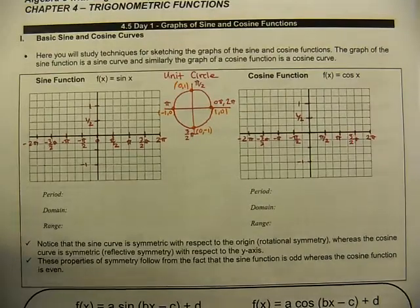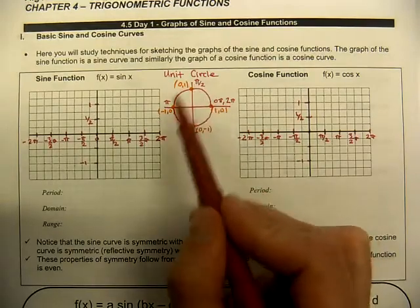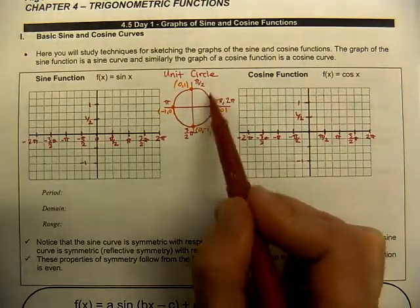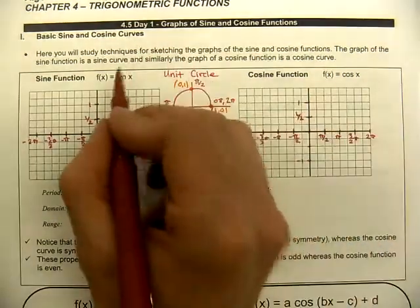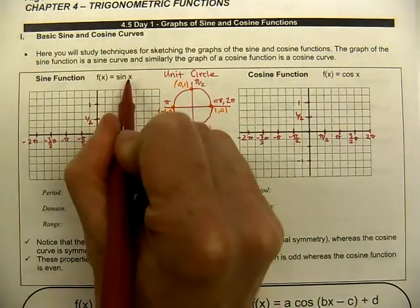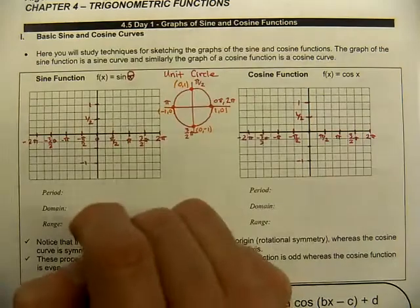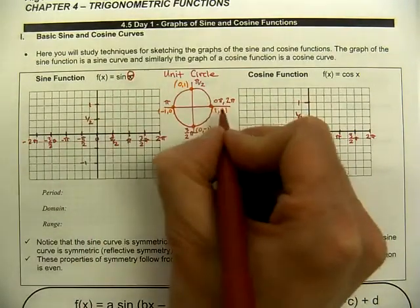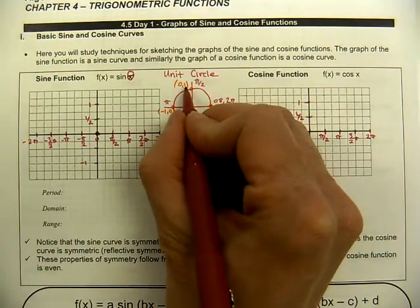We're graphing our sine and cosine parent functions, which are based off of the unit circle. We're using the quadrant angles only as our critical values to plot five points, traversing through each quadrant. With a function you need an input and an output — the input is an angle of rotation, so you could call it sine of theta. At zero radians the output is the y-coordinate; since sine is paired with y, at zero the output is zero.